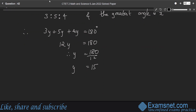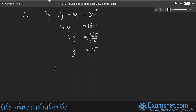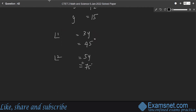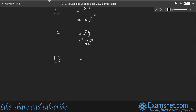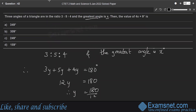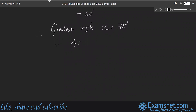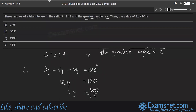The three angles are 3y equals 45 degrees, 5y equals 75 degrees, and 4y equals 60 degrees. The greatest angle x is 75 degrees. Therefore 4x plus 9 equals 4 into 75 plus 9 equals 309. Hence option B is the right answer.